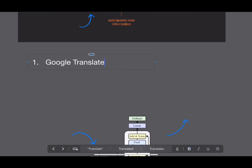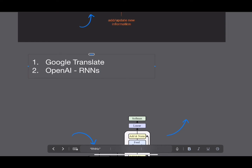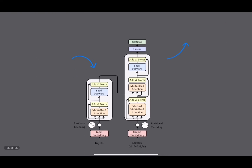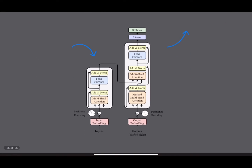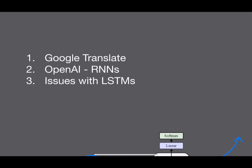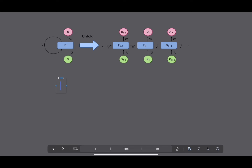LSTMs are definitely still worth learning for a few reasons. One, they're still used in products like Google Translate, so they're not entirely obsolete. The head researcher at OpenAI, Ilya, actually said he thinks RNNs could make a comeback. Also, understanding the issues with LSTMs helps us understand why the transformer neural network was originally developed.